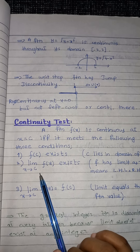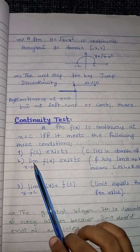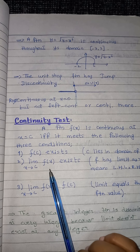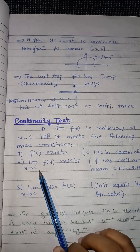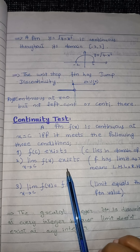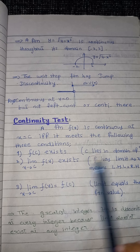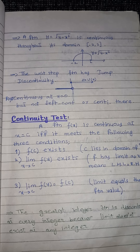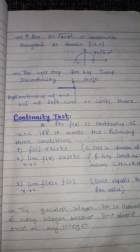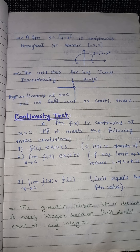The second condition is that the limit exists at that point — meaning both the right-hand limit and the left-hand limit exist, and they are equal to each other. The third condition checks whether the answer from condition one equals the answer from condition two.